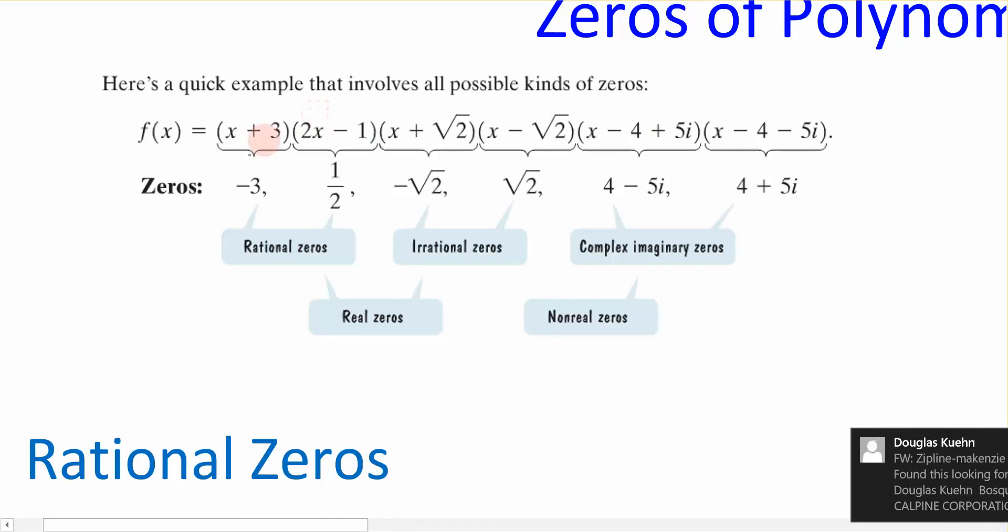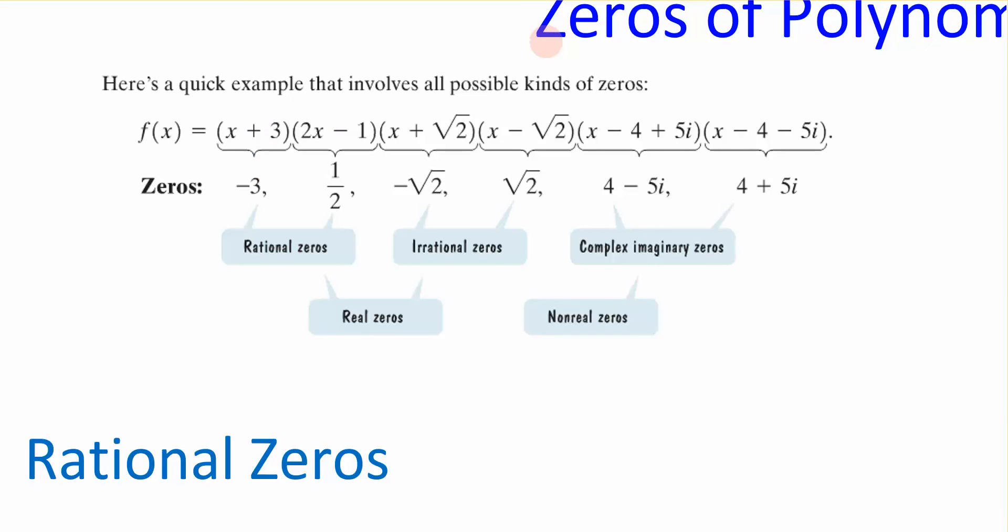First, we have the traditional rationals, which we are used to seeing when we factor, like a trinomial. We have these irrational zeros, which can occur whenever we factor using the quadratic formula. And then finally, we have imaginary roots, or complex imaginary roots. These are the roots that don't show up when I graph something, but we know that they could possibly, potentially be there on any type of polynomial. What we're going to focus on first is how do I take a polynomial and find its rational zeros, these right here?